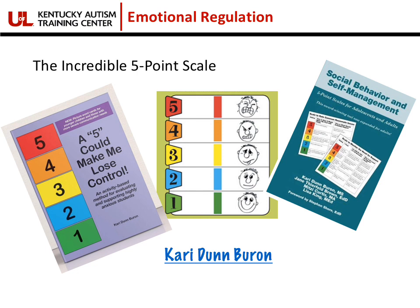A very similar system is the Incredible 5-Point Scale, developed by Kari Dunn Buron. It's a five-point color-coded scale, and you can create a five-point scale for whatever your student is struggling with. There's a great book that identifies lots of different five-point scales for adolescents and adults to help manage behaviors and social interactions, and another book on what to do when we reach that 'five zone' — the red zone — and ways to get back down to a one. Kari Dunn Buron's website has lots of downloadable resources and YouTube videos on the Incredible 5-Point Scale.